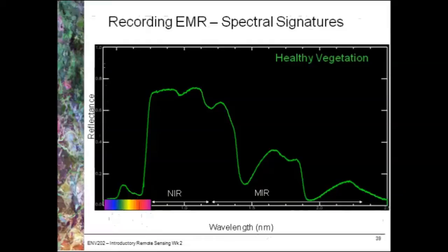Chlorophyll absorbs at 675 nanometers, and this is really for the use of photosynthesis. The other key thing to note is that if you look at the percentage of green light that this sample of vegetation is actually reflecting, it's only at about 15% — so it's not reflecting a lot of green light at all. This is where satellite remote sensing becomes really useful because we can use sensors that are much more sensitive in the near infrared and mid infrared regions.